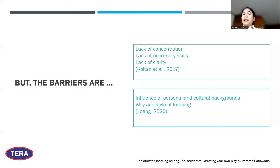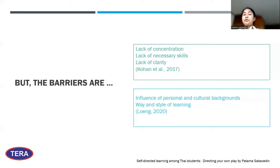Lack of necessary skills also includes communication skills, creating difficulties in engaging in self-directed learning behavior. Third, Cohen and colleagues 2017 proposed lack of clarity as a barrier — people don't have a clear idea of how or what to do. At the same time, Long 2020 proposed another two factors: the influence of personal and cultural backgrounds, and the ways and styles of learning and teaching. I'll share my own experience about self-directed learning related to these styles of learning and teaching.